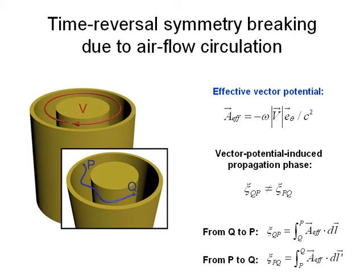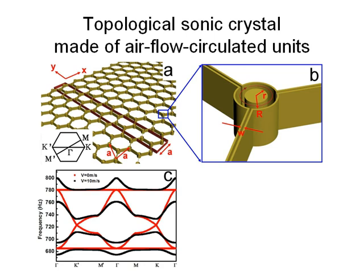We utilize these airflow-circulated units to constitute a sonic crystal. In the case without airflow, the red curve in figure C shows the corresponding frequency bands, and we notice several degenerate points, such as Dirac points around 723 Hz. However, when the airflow is introduced, the black curve shows that all these degeneracies are lifted due to the broken time-reversal symmetry induced by airflow.